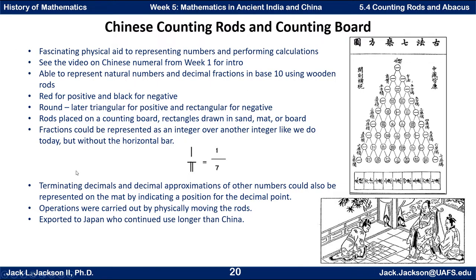They were able to represent natural numbers and decimal fractions at base 10 using wooden rods. At first they were probably made out of bone, later on they're made out of wood. They were red for positive, black for negative. They were round and later triangular for positive and rectangular in shape for negative. But the rods are placed on a counting board which is basically rectangles that are drawn in the sand or maybe on a mat or on an actual board.